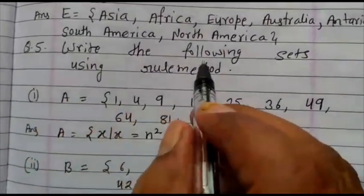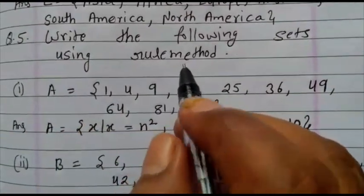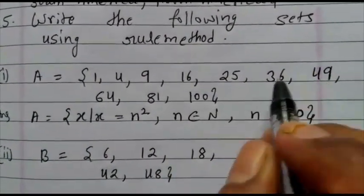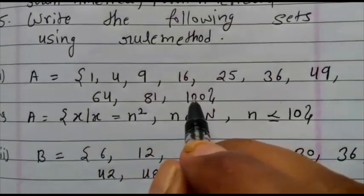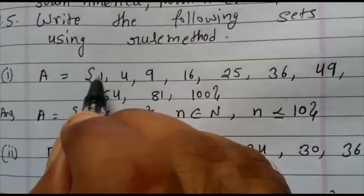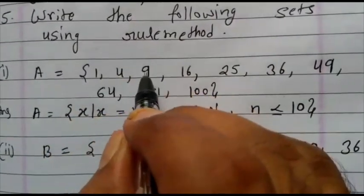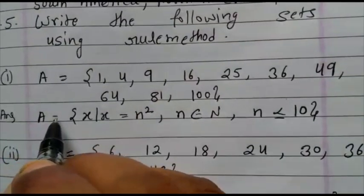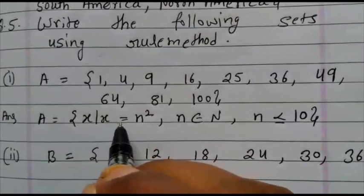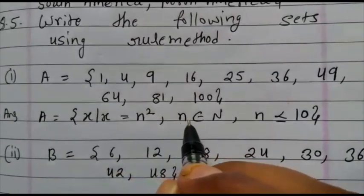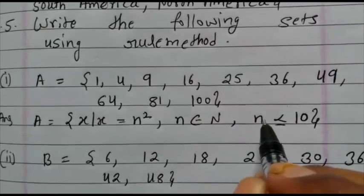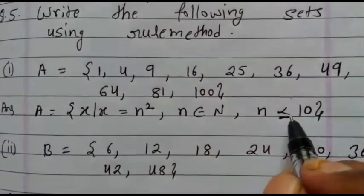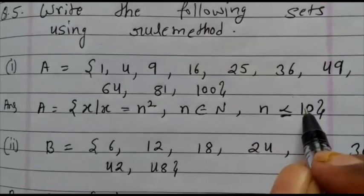Now come to question number 5. Write the following sets using the rule method. First question, A equals 1, 4, 9, 16, 25, 36, 49, 64, 81, 100. See here, all the numbers are the square of a number. 1 is square of 1, 2 square is 4, 3 square is 9, 4 square is 16, and so on. How to write the answer? A equals curly bracket x of x equals n square, comma, n belongs to natural number, n is less than or equal to 10. Why 10? Because here 10 square is hundred. That's why we write this number as 10.